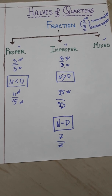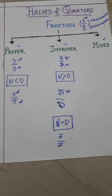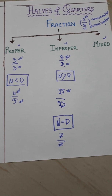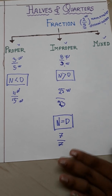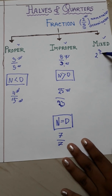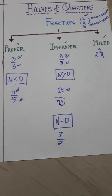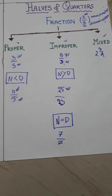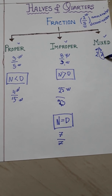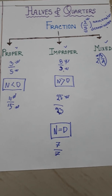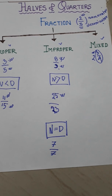Next we will go to mixed fraction. What is a mixed fraction? A mixed fraction is a fraction where there is a whole number and a proper fraction. Suppose I am writing here 2 whole 3 by 4. Here 2 is the whole number and 3 by 4 is a proper fraction. So mixed fraction consists of a whole number and a proper fraction.